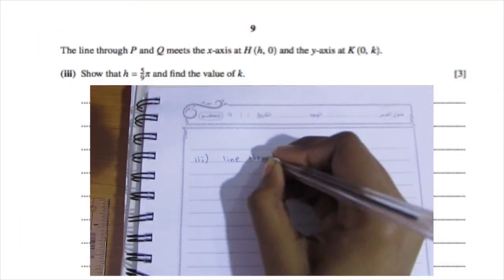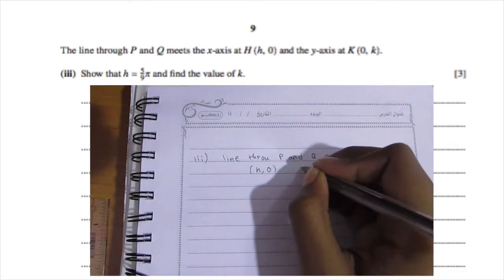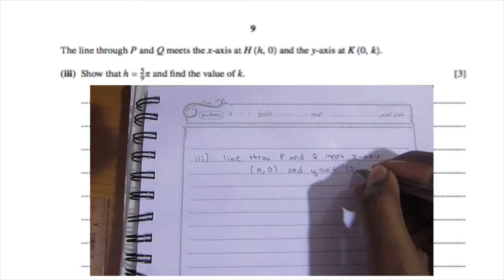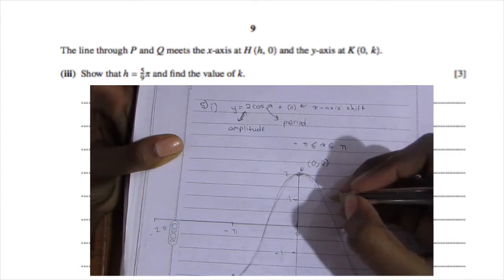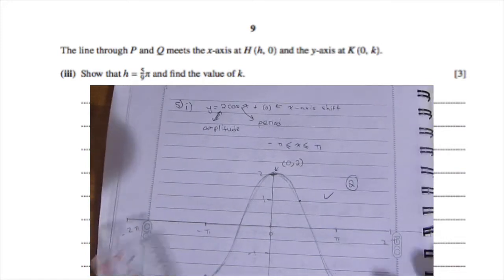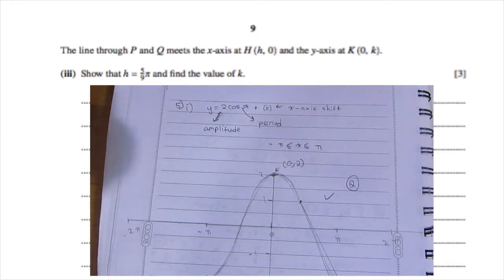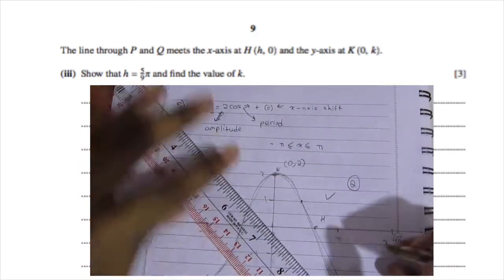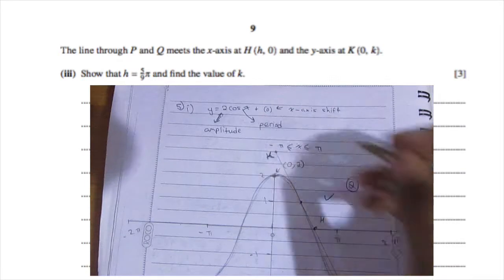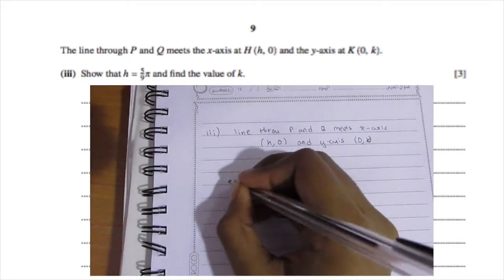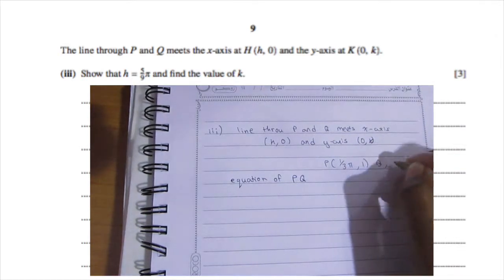Part three: the line through P and Q meets the x-axis at H(h, 0) and the y-axis at K(0, k). We need to show that h = 5π/9 and find the value of k. We'll start by finding the equation of line PQ using y = mx + c, where m is the gradient and c is the y-intercept. Since we have both points we can find the gradient. You can also visualize this by placing the points on the sketch you drew earlier — just erase them afterwards so you don't lose marks.